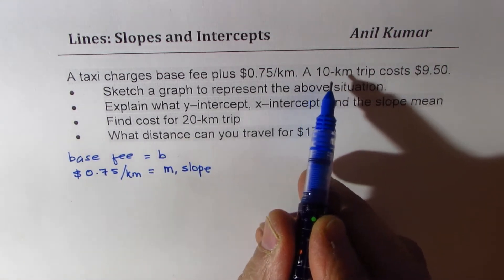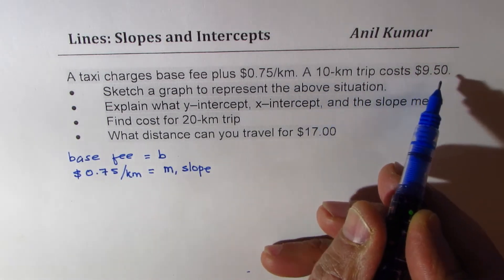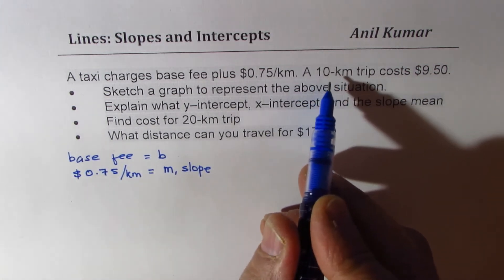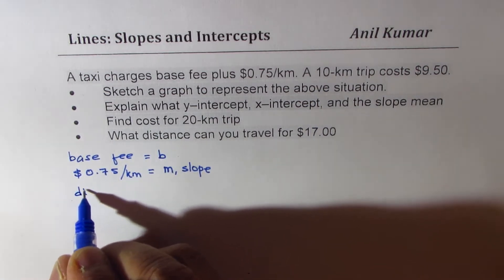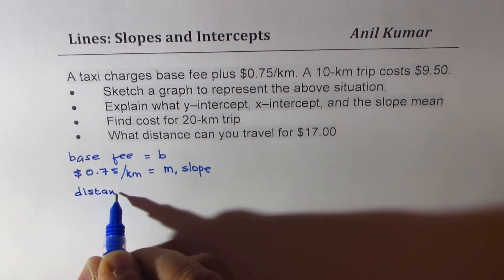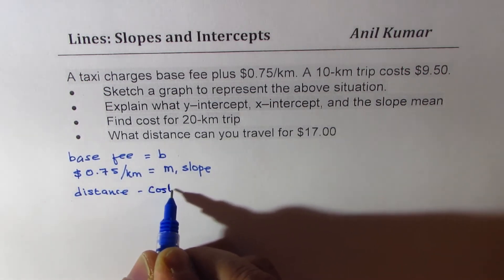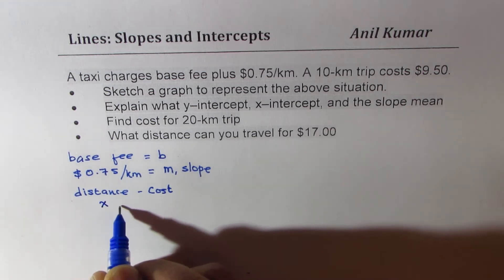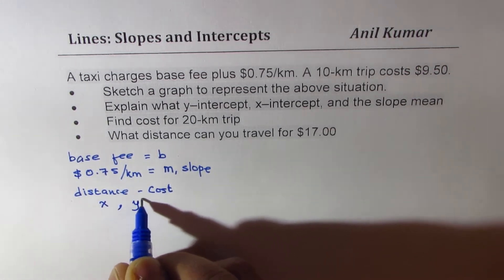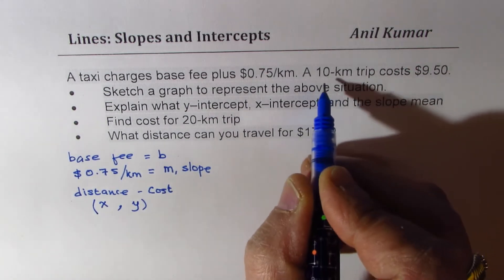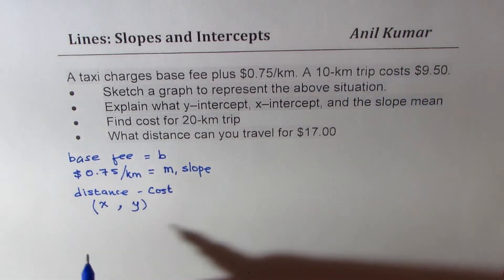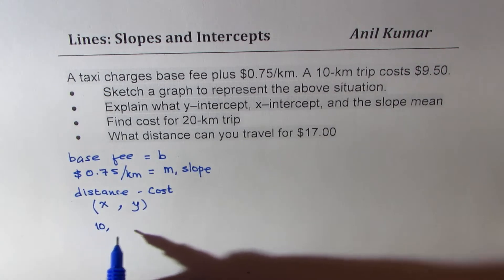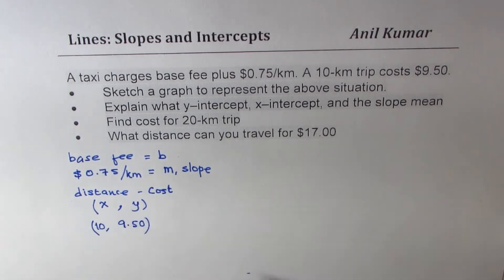And we are given a 10-kilometer trip costs $9.50. So this 10-kilometer is the distance. We'll write distance as independent variable x, and cost as dependent variable y. When we say 10-kilometer trip costs $9.50, it means the coordinate point is (10, 9.50). So I hope all these parameters are absolutely clear.